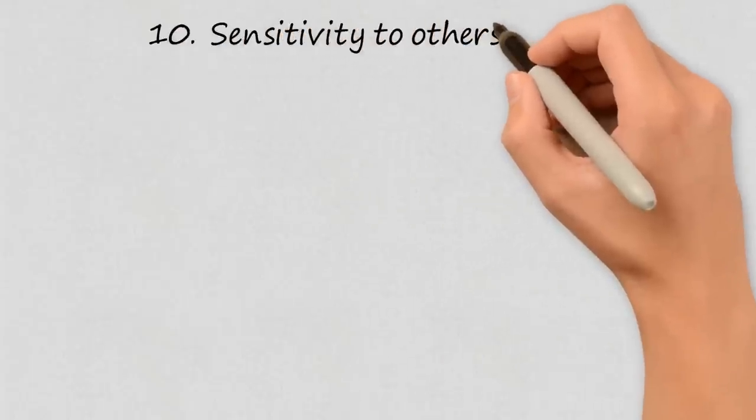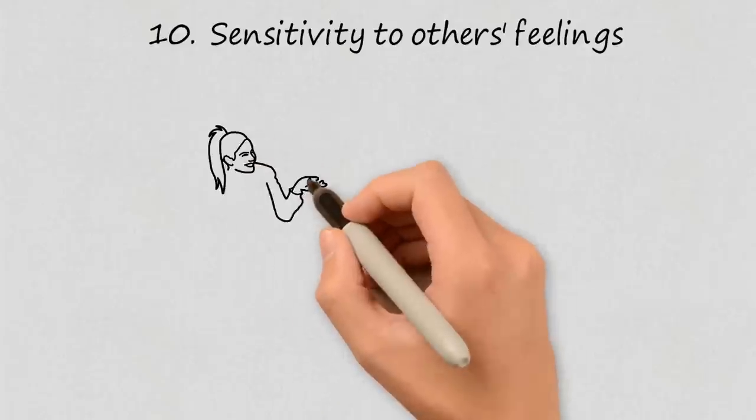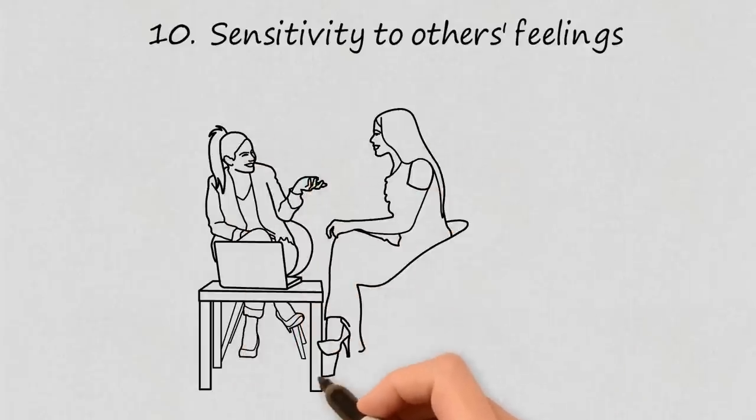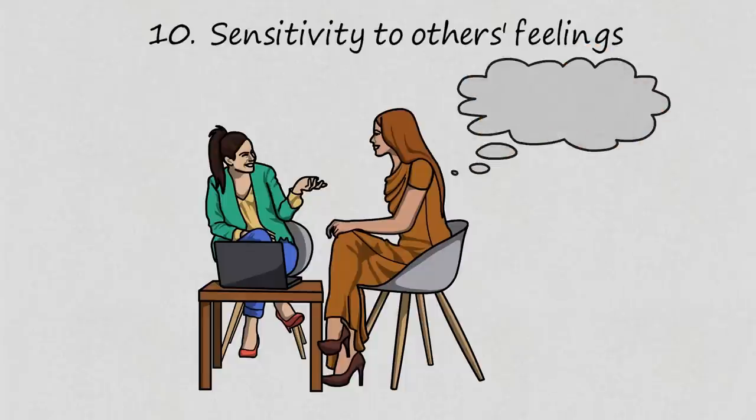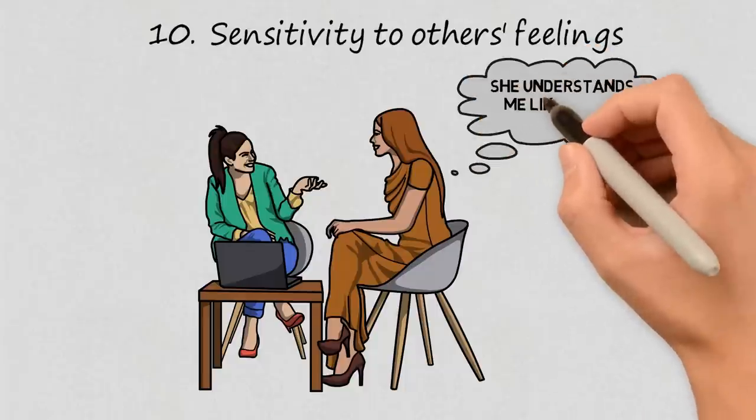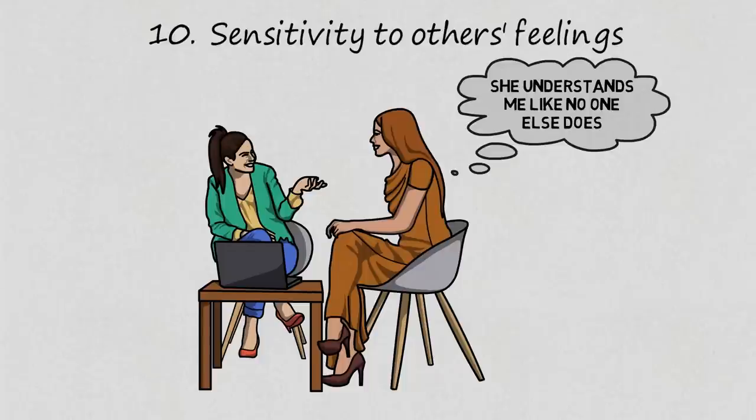Number 10: Sensitivity to Others' Feelings. Intelligence is not only determined by a high IQ. Emotional intelligence is equally important and plays a significant role in achieving quality, successful relationships, and overall happiness. On this channel, you can find several videos where I talk about emotional intelligence. I put all the links below in the description in case you'd like to learn more about this topic.